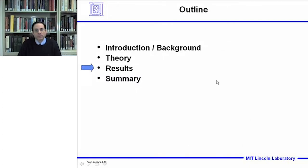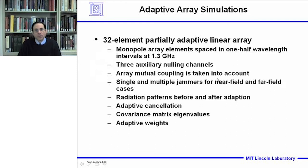Let's show some results. In the adaptive array simulation, we will be investigating a 32-element partially adaptive linear array of monopole elements spaced at one-half wavelength intervals at 1.3 gigahertz. We'll use three auxiliary nulling channels to null out the interference, taking into account array mutual coupling by the method of moments formulation. We will analyze single and multiple jammers for both near field and far field cases, showing radiation patterns before and after adaption, adaptive cancellation, covariance matrix eigenvalues, and adaptive array weights.